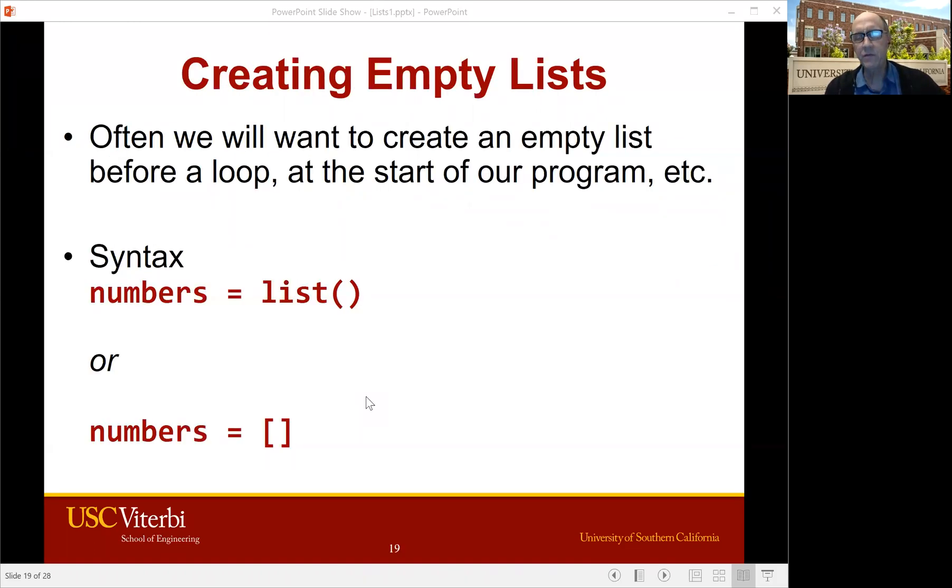Now the list that we've seen so far, we created with something in them, square brackets, dog, cat, whatever it was. But you can start a list empty. So here we have numbers equals list parentheses with nothing in the parentheses, or you can just say numbers equals square brackets with nothing listed in between. And we use this a lot because let's say you want to go back to the scores problem we started with. The program doesn't have any scores in it until you start asking the users. So really you'll have a list that starts empty and then we're going to add to it.